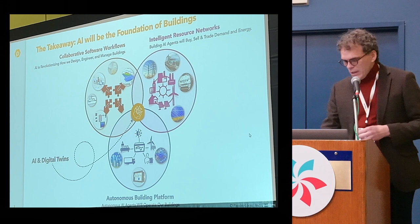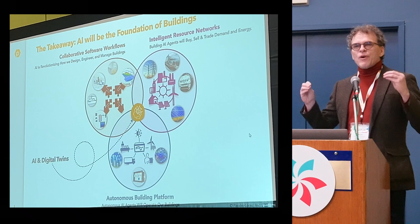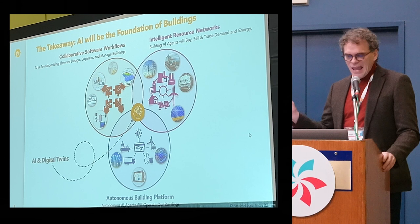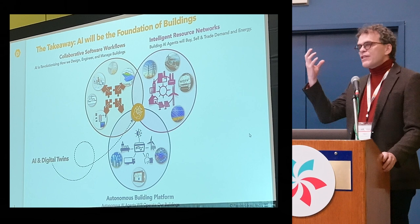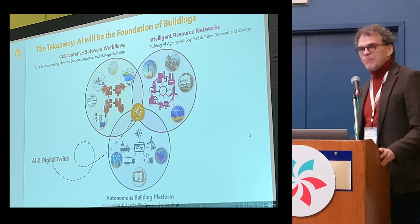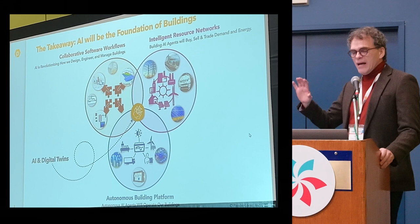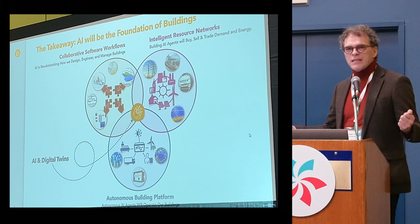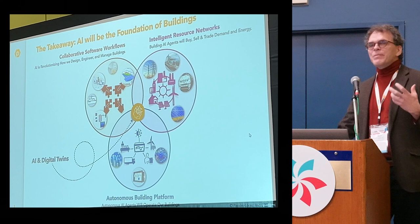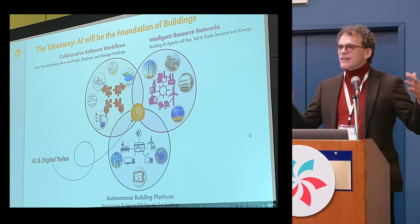The takeaway from the last year or two of AI transformation is that AI will absolutely be the foundation for buildings. We see three big spaces: how we control buildings — buildings will be fully autonomous, that will be the endpoint of this market; we will have intelligent resource networks where buildings negotiate back and forth with other buildings and utilities on their real-time energy and resource needs; and we'll build collaborative software workflows across companies.